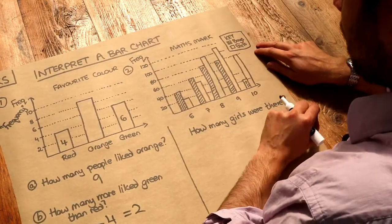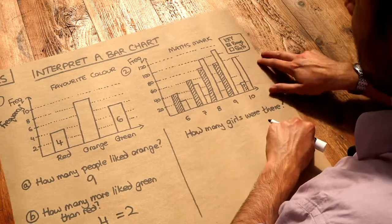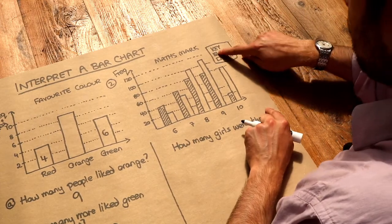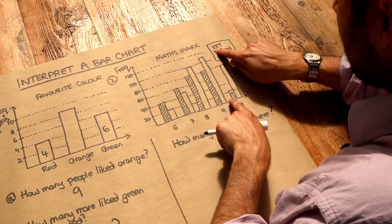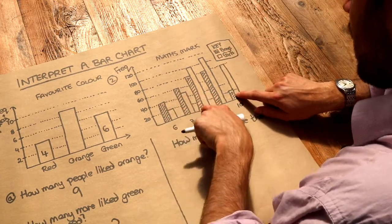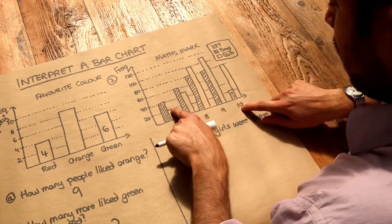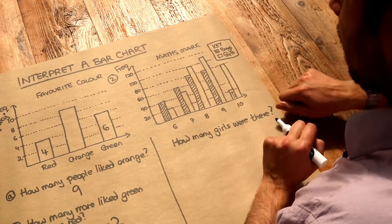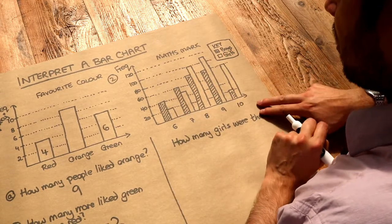Now with this second bar graph, we've actually got two sets of data. If you look at this key, you can see we've got boys, those are the shaded bars, and we've got the girls, which are the non-shaded bars according to this key here.